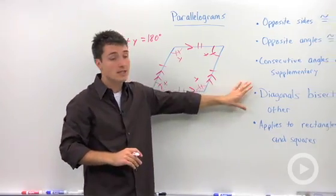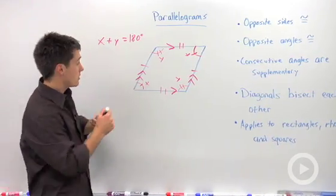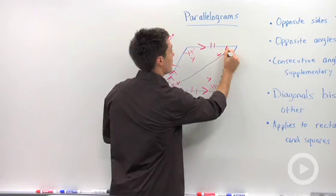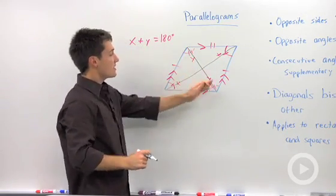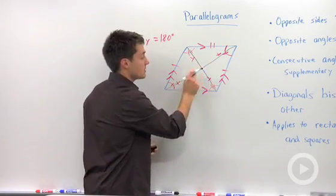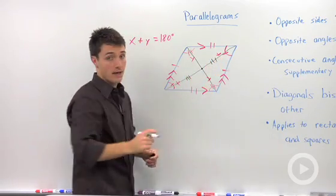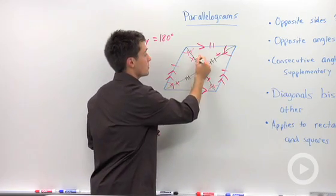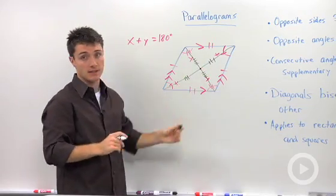And the last key thing is that the diagonals will bisect each other. So I'm going to draw that in, in a different color marker. So if I draw in a diagonal right here, and if I draw in another diagonal, there's only two diagonals in a parallelogram. Notice that these are not going to be congruent to each other, but what will happen is that this point right here will bisect that diagonal into two congruent pieces, and this point will bisect the other diagonal. So I'm going to use one, two, three, four markings to show that this is bisected.